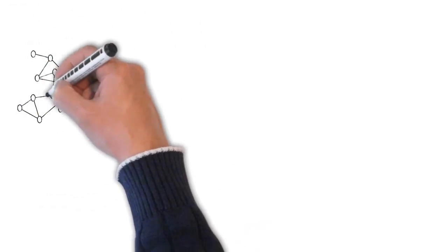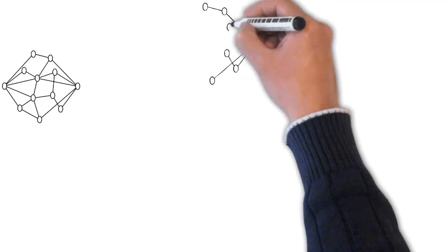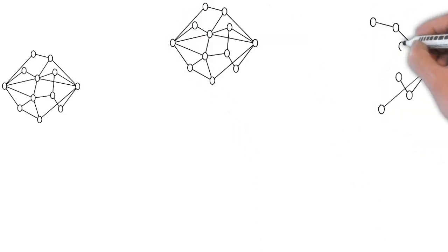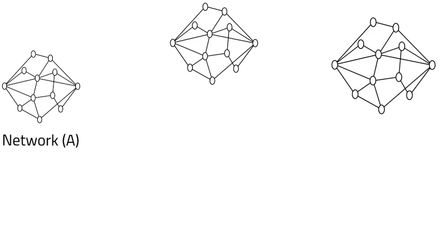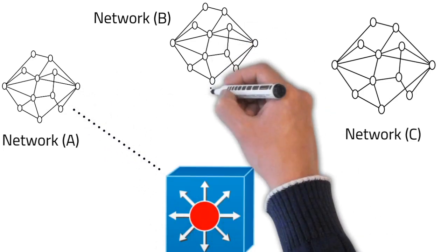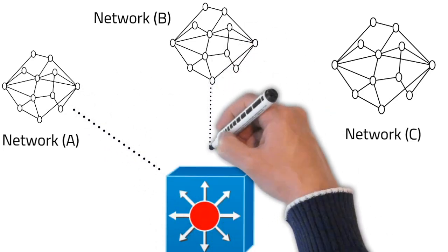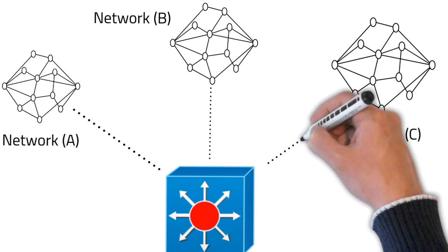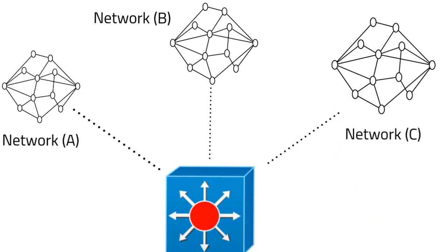Layer 3 switches can connect and communicate with other routers in the network. Routers connect networks together with the purpose of forwarding network traffic, which is layer 3 traffic known as packets. Since these switches can make routing decisions based on IP addresses, they can also implement routing protocols like EIGRP, OSPF, and BGP — basically the multiple routing protocols that Cisco supports.